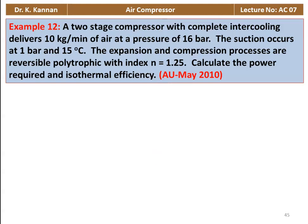Example number 12 from May 2008 question paper. A two-stage compressor with complete intercooling delivers 10 kg per minute of air at a pressure of 16 bar. Suction occurs at 1 bar and 15 degrees Celsius. The compression process is reversible polytropic with index n = 1.25. Calculate the power required and isothermal efficiency.